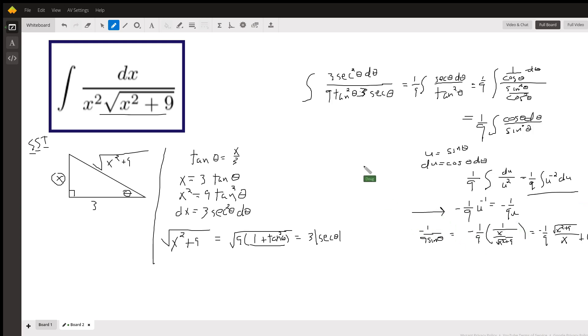Now we're ready to go backwards. U is the sine of theta. So there's U replaced with sine of theta. But the sine of theta, going back to our original right triangle, sine of theta is X over the square root of X squared plus 9.